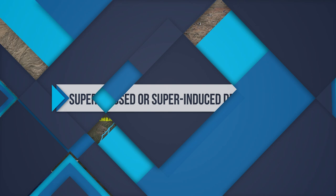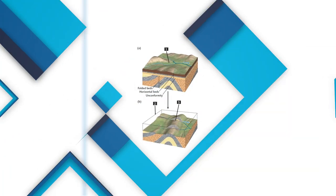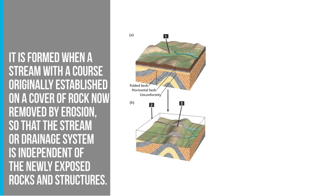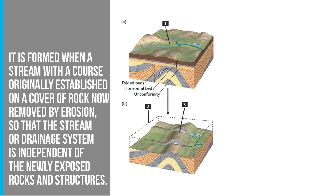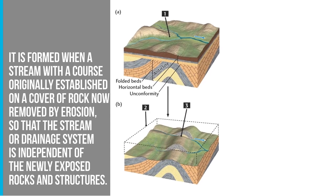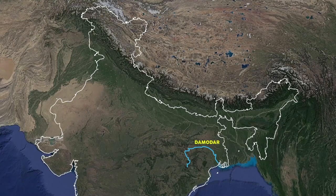Superimposed or Superinduced Drainage Pattern: This is formed when a stream with a course originally established over a cover of rock, now removed by erosion, is such that the stream or drainage system is independent of the newly exposed rock and structures. The Damodar, Chambal, Banas, and rivers flowing on the Rewa Plateau are good examples of the superimposed drainage pattern.